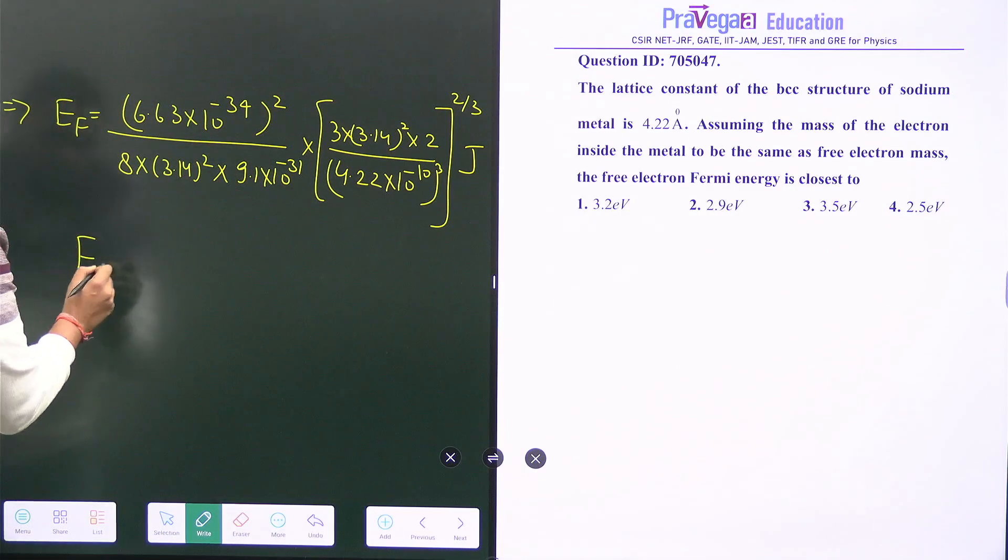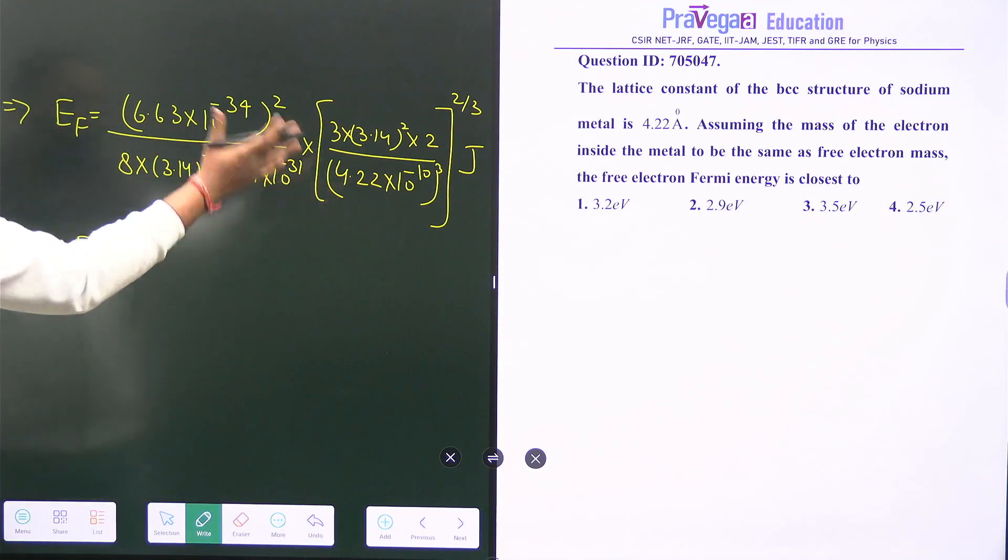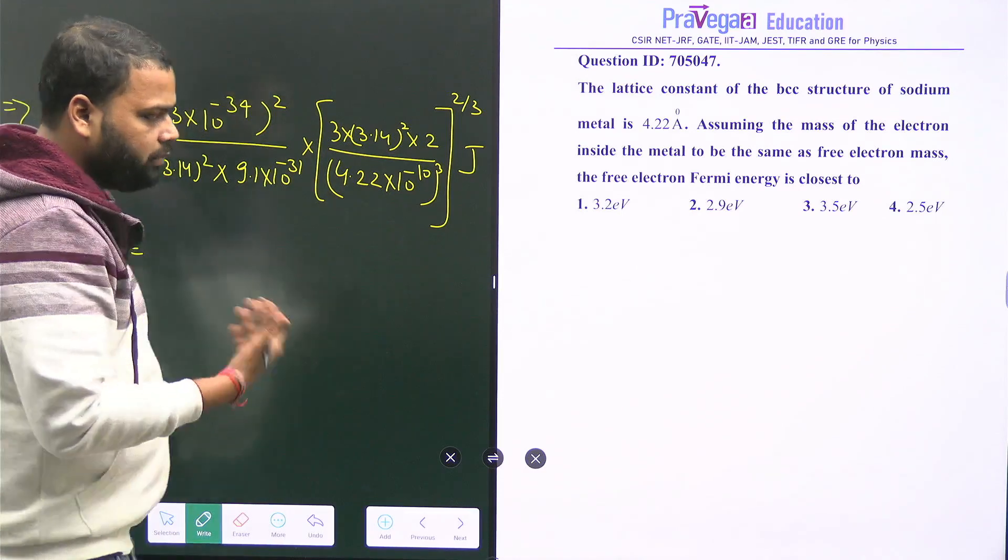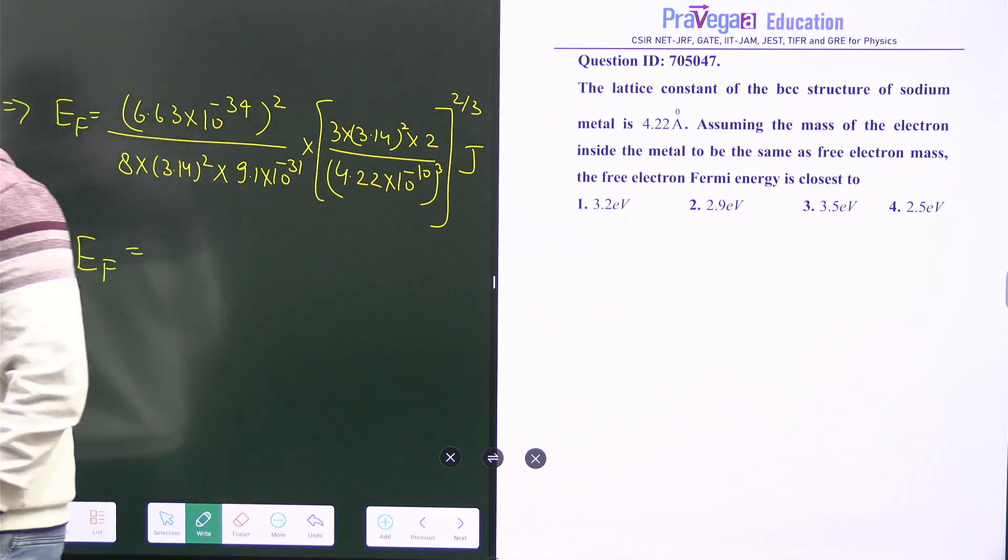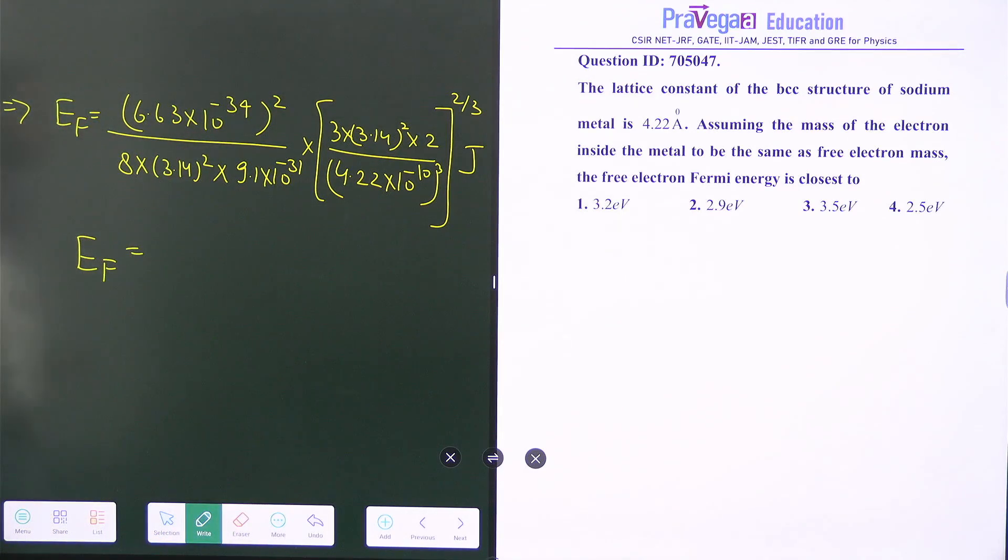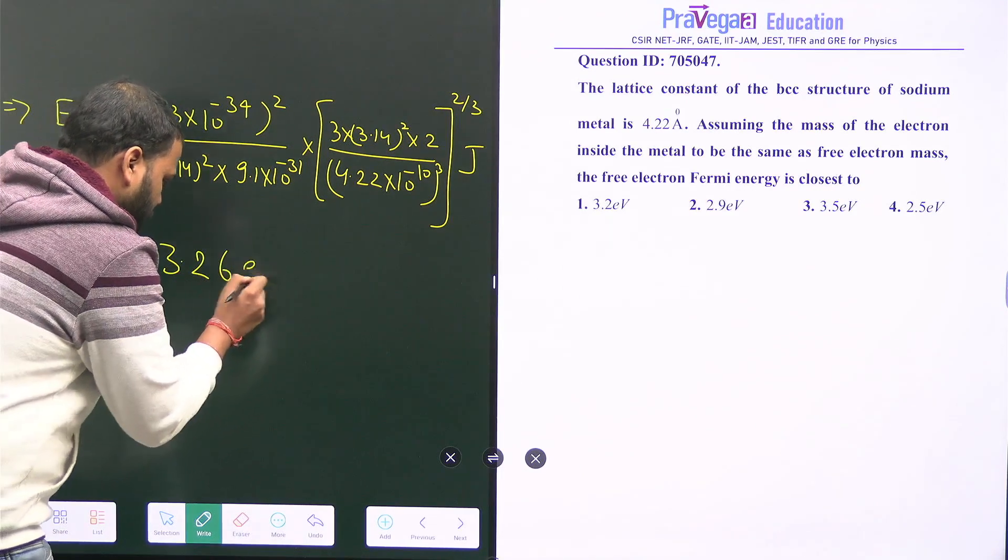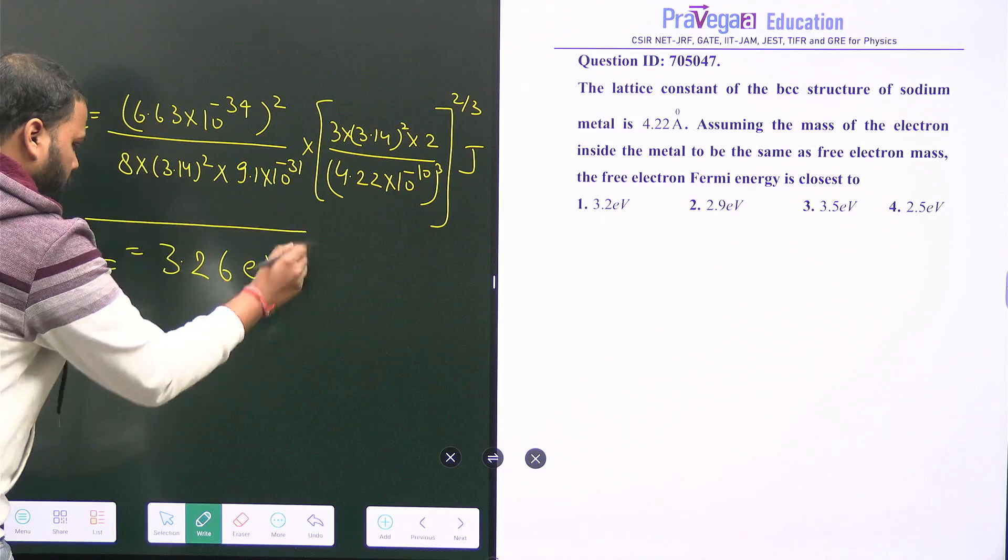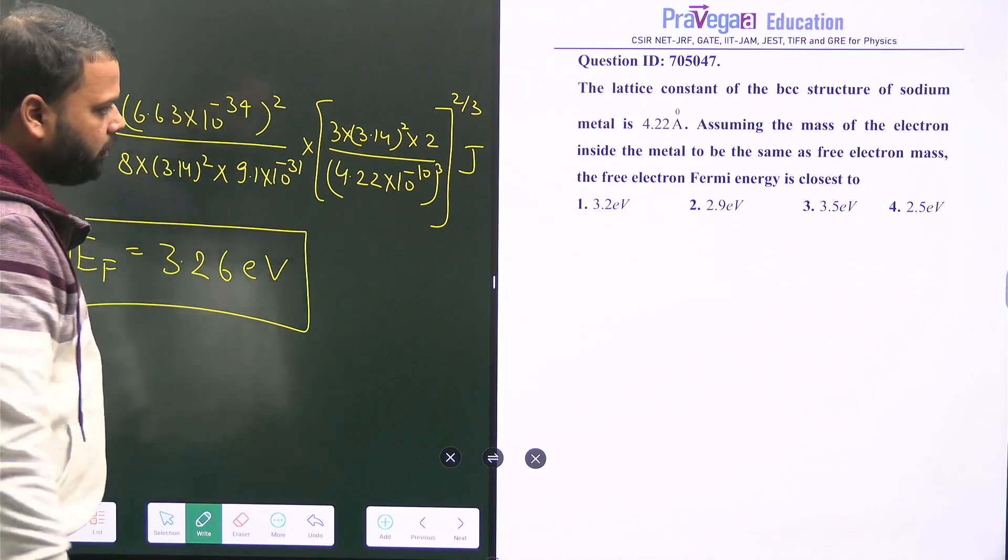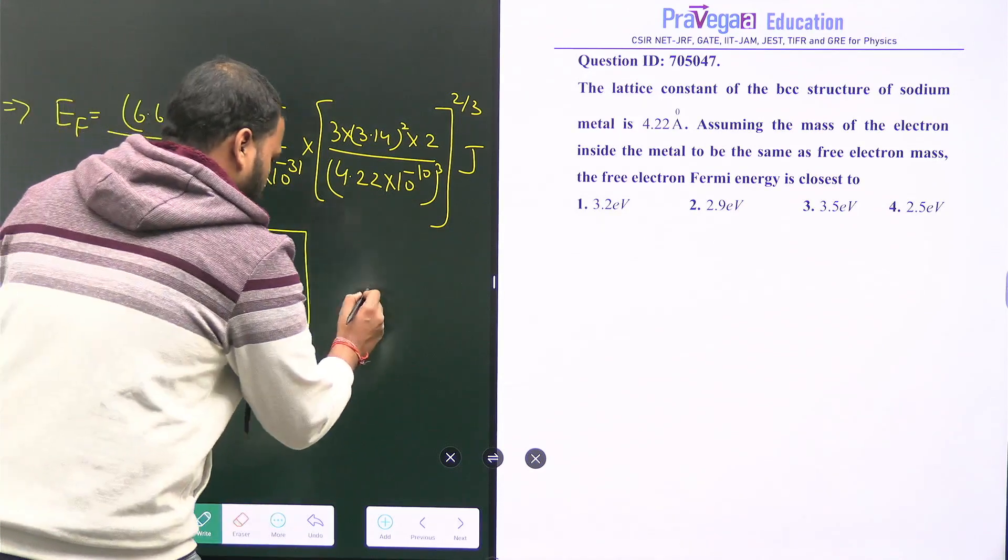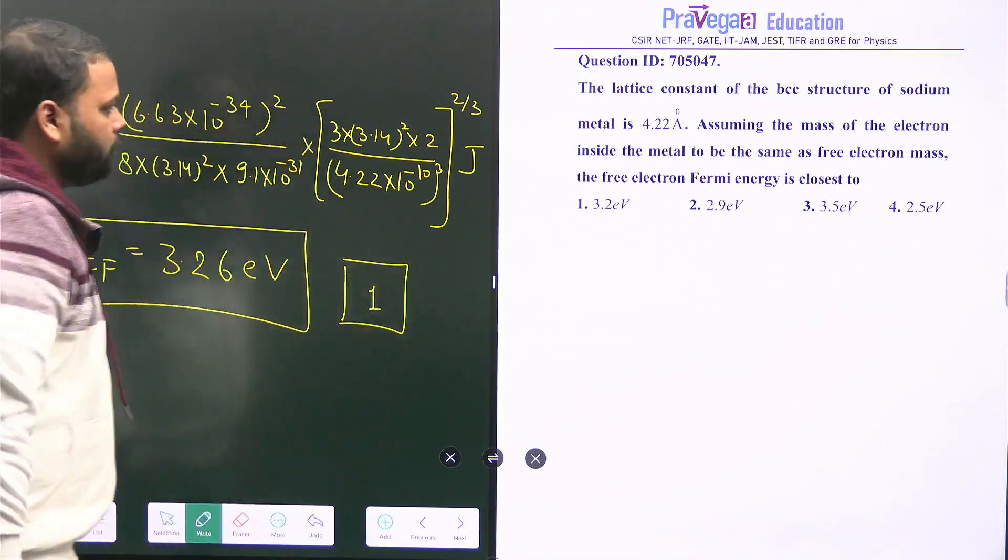When you convert the value to joules, you will get the answer as 3.26 electron volts. If you see the options, option 1 is correct.